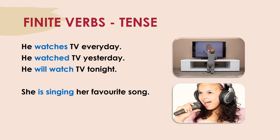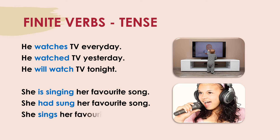Let us take another example. She is singing her favorite song — 'sing' becomes 'is singing,' present progressive tense. She had sung — 'had sung' is past perfect tense. And she sings her favorite song — simple present tense. So you see the verb 'sing' changing according to tense. That is how finite verbs change or modify themselves according to the tense.